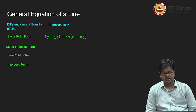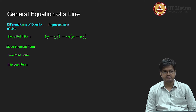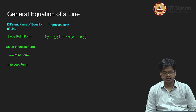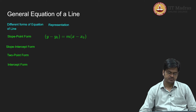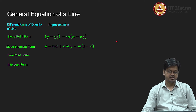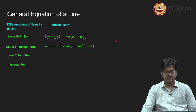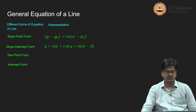So y is equal to m times (x minus d). In a similar manner, suppose the y-intercept is given to me and that intercept is at c, then y₀ will be replaced by c and x₀ will be replaced by 0. Therefore I will come up with an equation y is equal to mx plus c. So given a y-intercept, the equation has the form y equals mx plus c, and given an x-intercept d, the equation has the form y equals m times (x minus d).